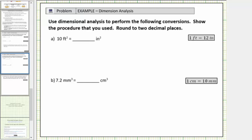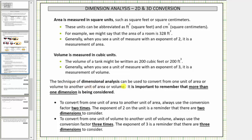Welcome to a lesson on conversions involving area and volume. The technique of dimensional analysis can be used to convert from one unit of area or volume to another unit of area or volume. However, it is important to remember that more than one dimension is being considered. Therefore, to convert from one unit of area to another unit of area, always use the conversion factor two times. The exponent of two on the unit is a reminder that there are two dimensions to consider.